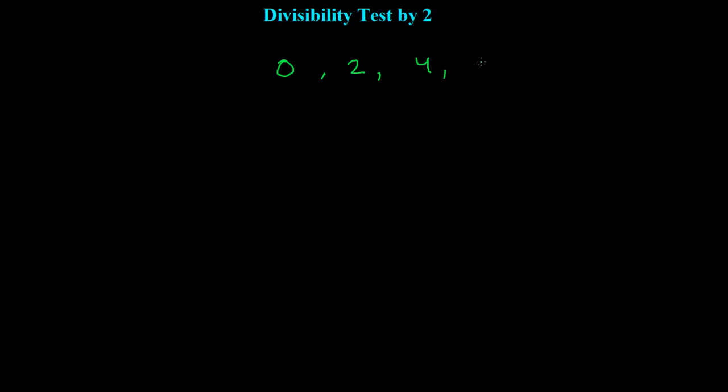To check any number whether it is divisible by 2 or not, we need to know the divisibility test by 2 — which numbers are divisible by 2 and which are not. It is very simple: any number whose ones place digit is 0, 2, 4, 6, or 8 is divisible by 2, otherwise not.